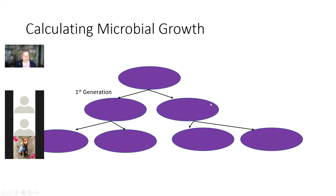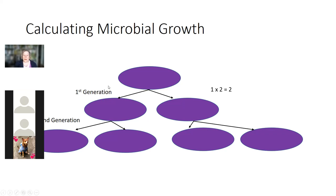So, the first generation: I go from one cell to two cells. The second generation: I go from two cells to four cells. How I calculate this - and how you're going to be calculating this on the day - each time we have a generation, we double our numbers. In the first generation we get two; in the second, two times two gives us four; a third time would be two times four, giving us eight. That's the level of math you'll need on the exam.